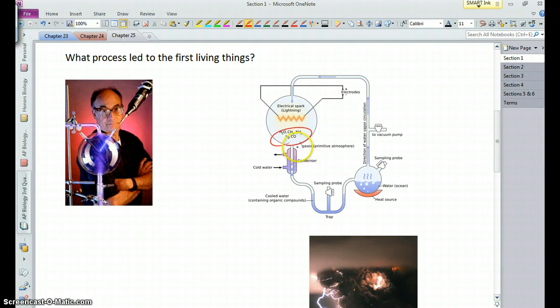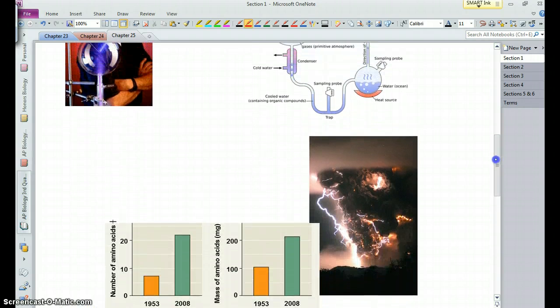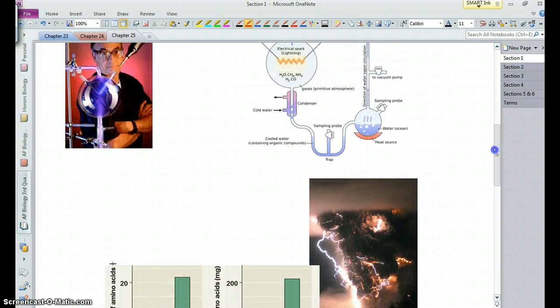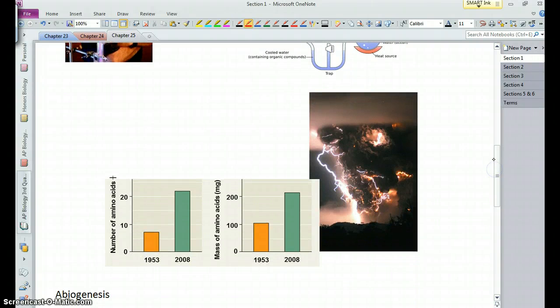And so they mixed these things together, heated them up, and provided some energy in the form of an electric shock, condensed, cooled them down, basically condensed it, liquefied it, and then tested that liquid for the presence of organic compounds. And indeed, they did find amino acids present.